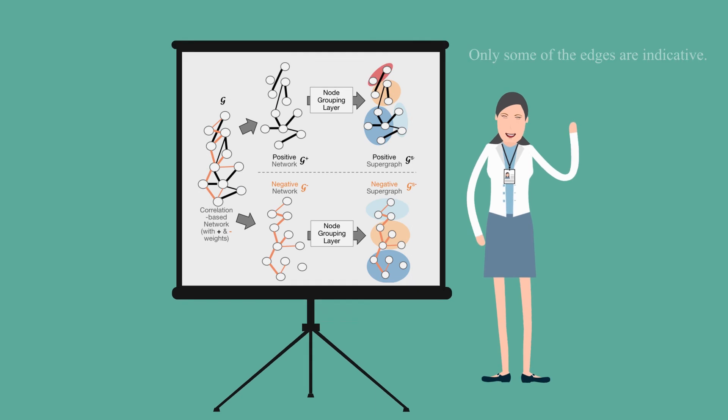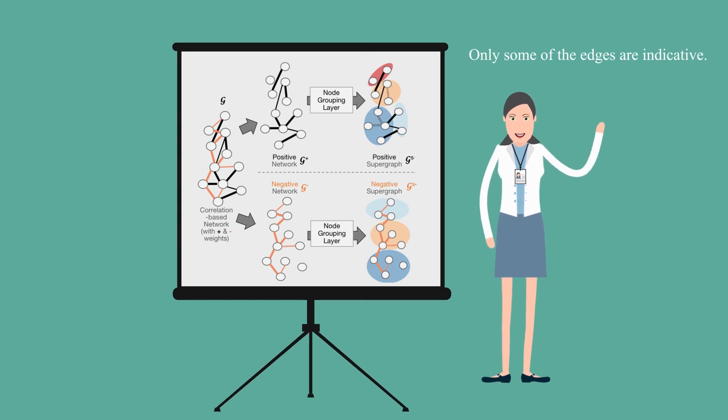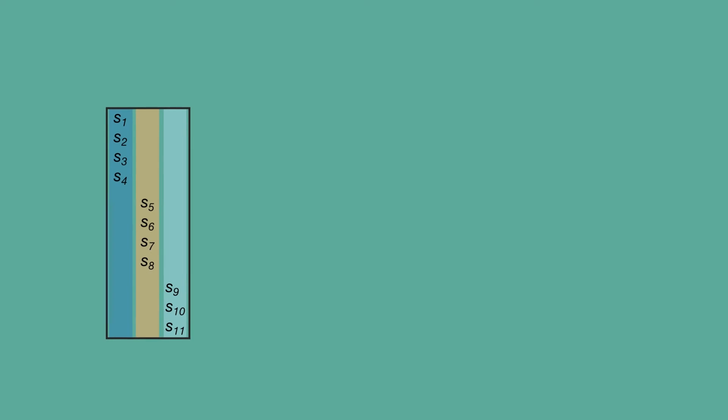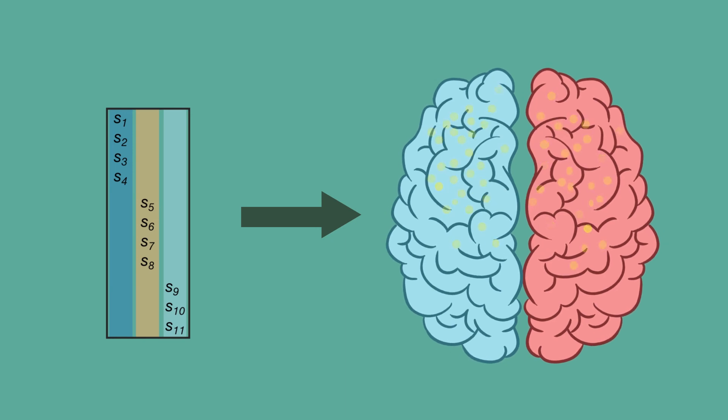First, the node grouping layer learns to cluster the nodes and forms a supergraph based on whether the connecting edges are indicative for their predicted phenotype. Therefore, by interpreting the learned node grouping matrices, we can pinpoint the most related brain regions for each phenotype.